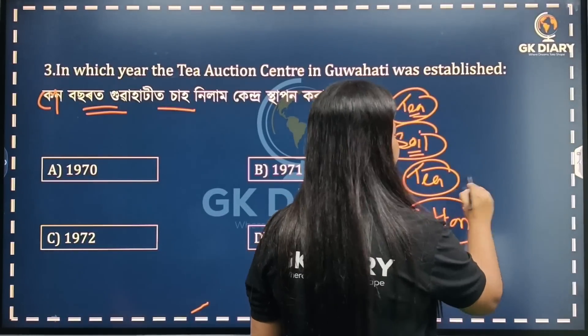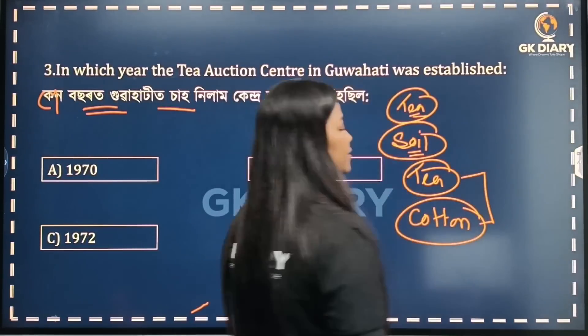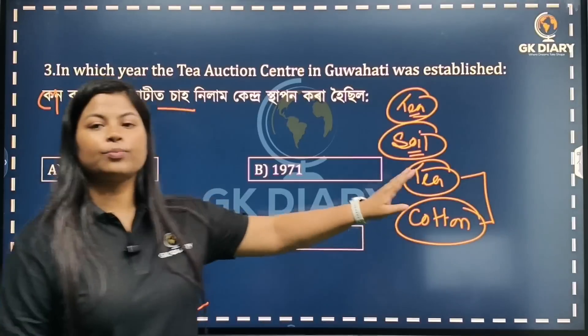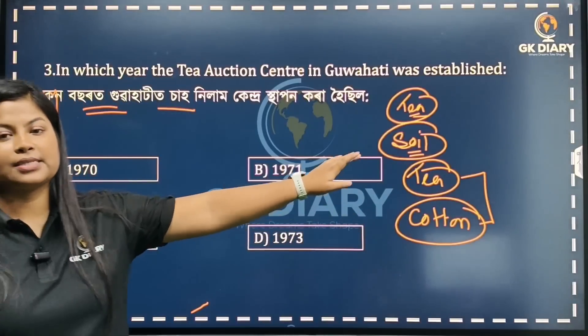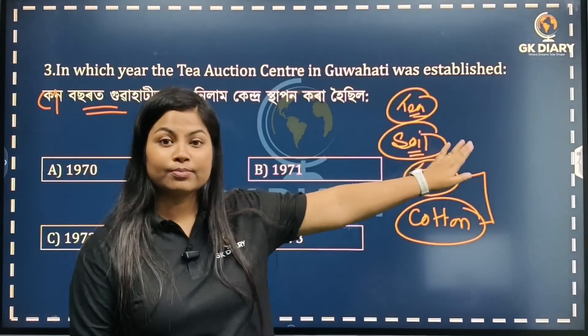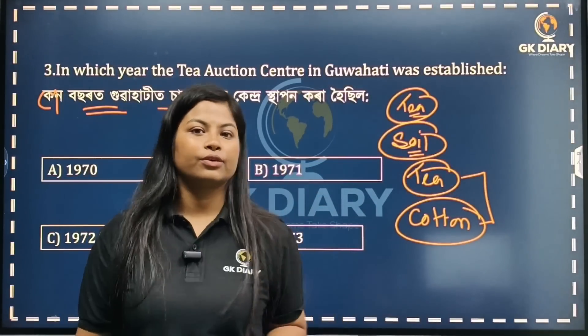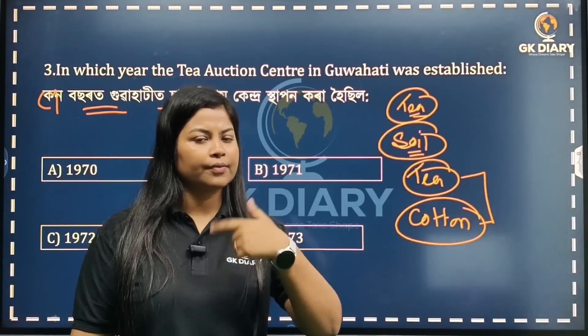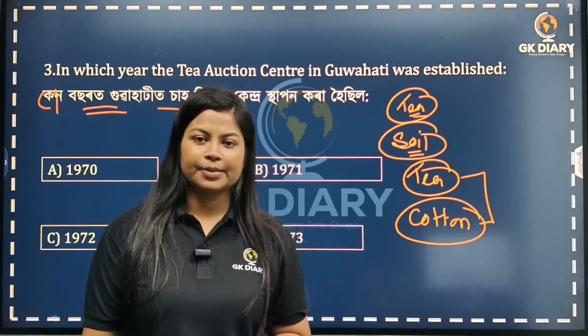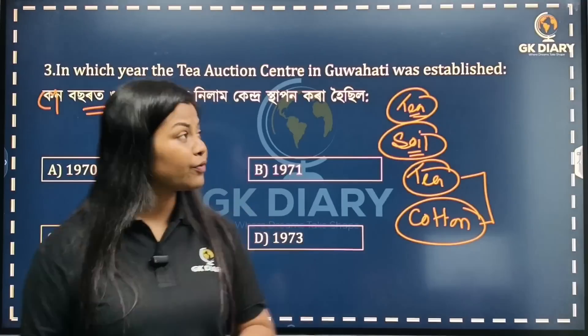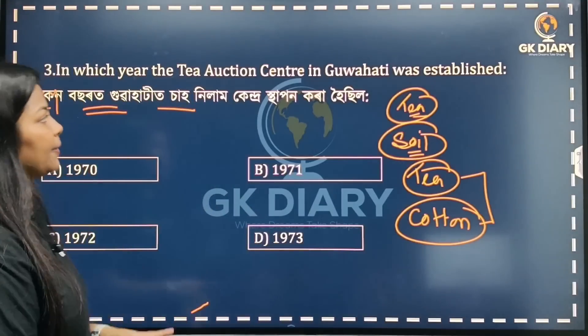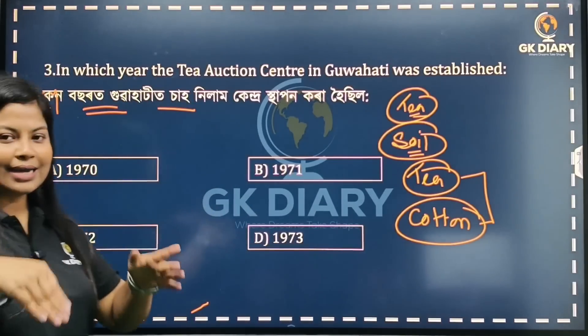You should study it. Cotton is also an important topic. So there are questions on that as well. You should check previous year questions too — this question has come before. So the Tea Auction Center in Guwahati — obviously everyone knows that Dispur is near Guwahati.